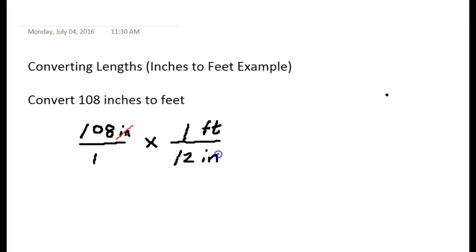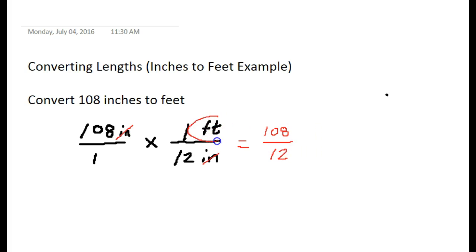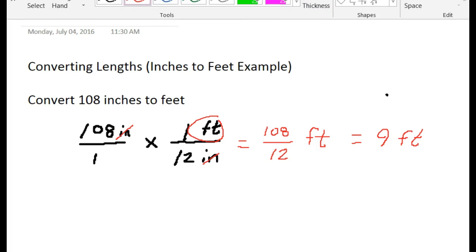Because inches over inches cancels out, my feet will be the ending unit. Multiplying fractions: 108 times 1 on top gives 108, and 1 times 12 on the bottom gives 12. So 108 over 12 feet — which of course is 9 feet. We all knew that, but it's nice to work through examples you understand.